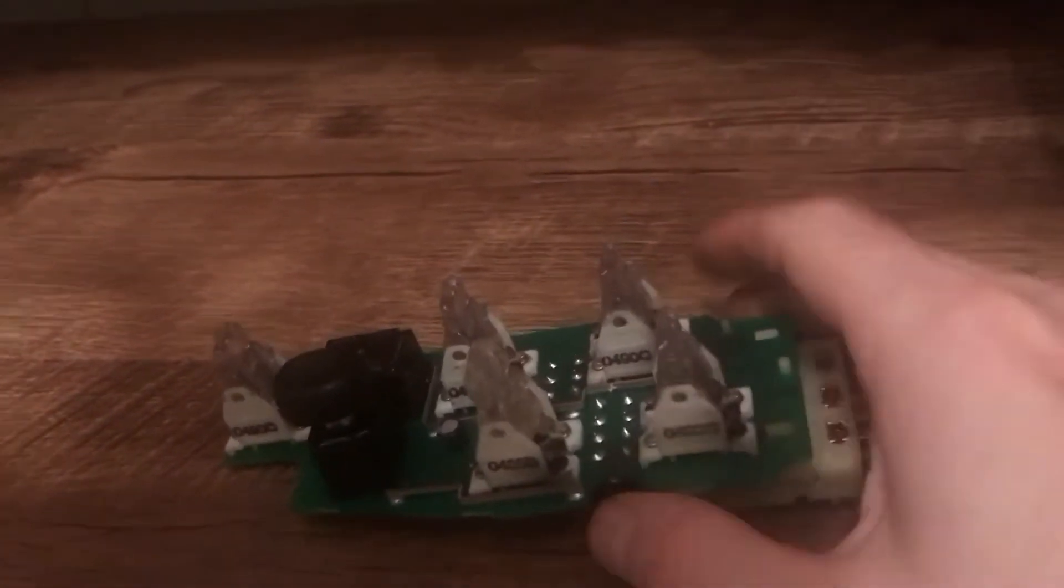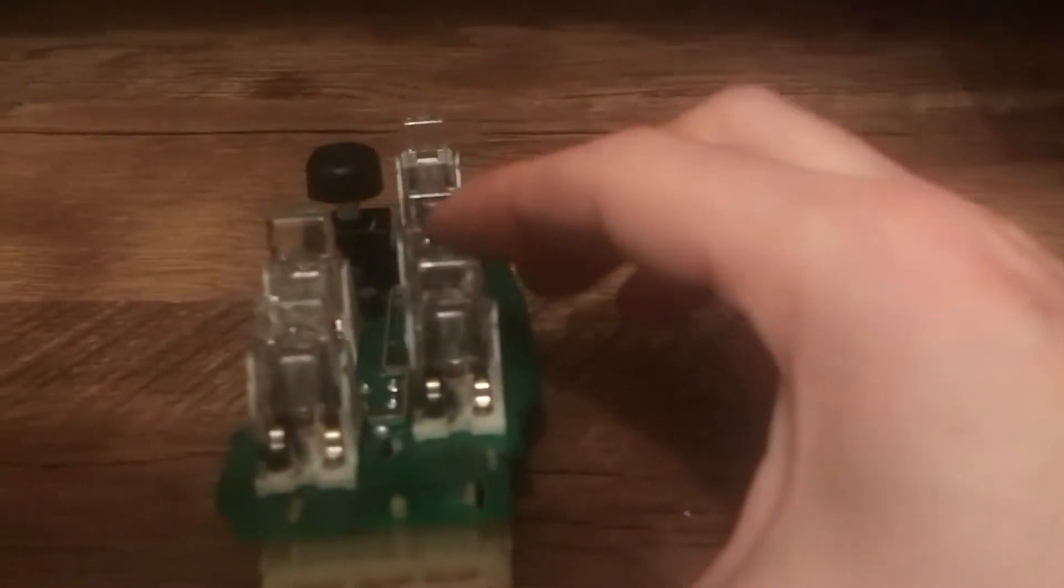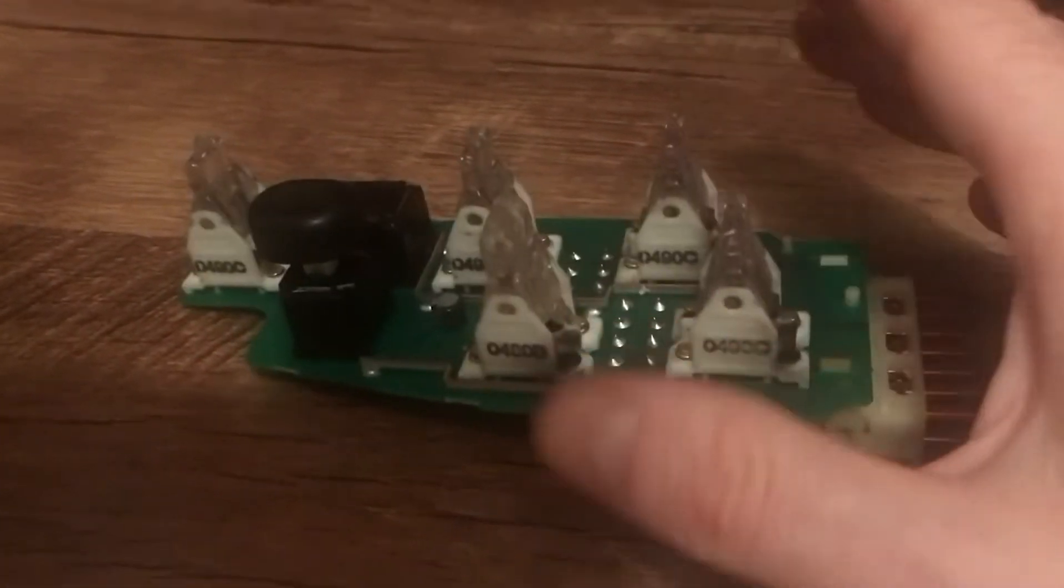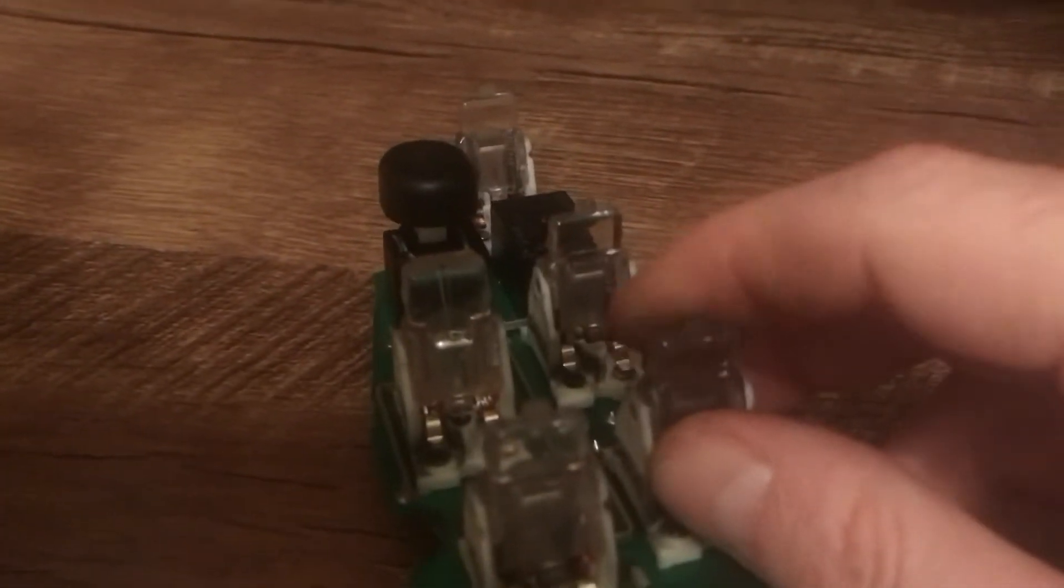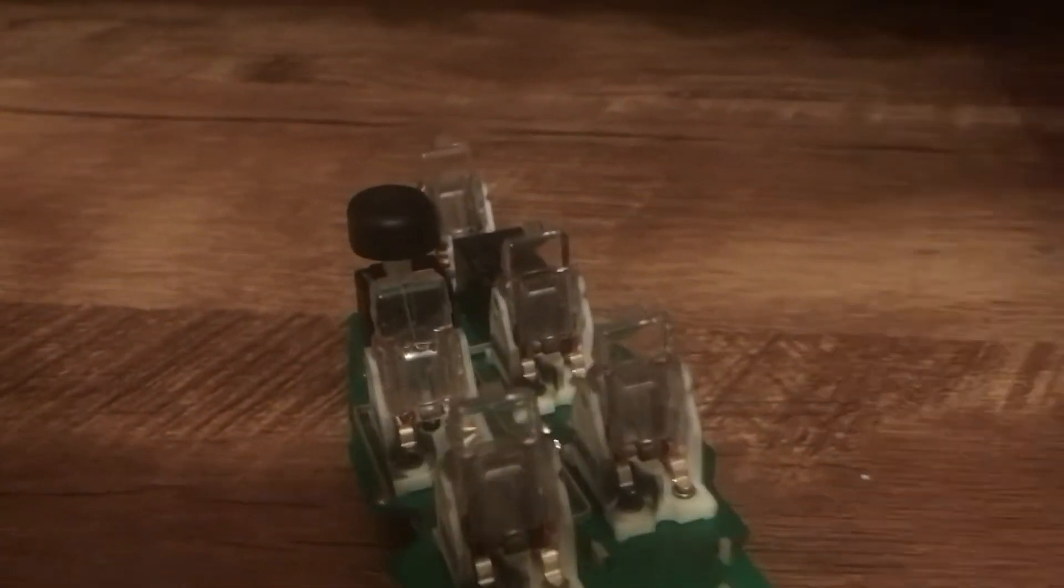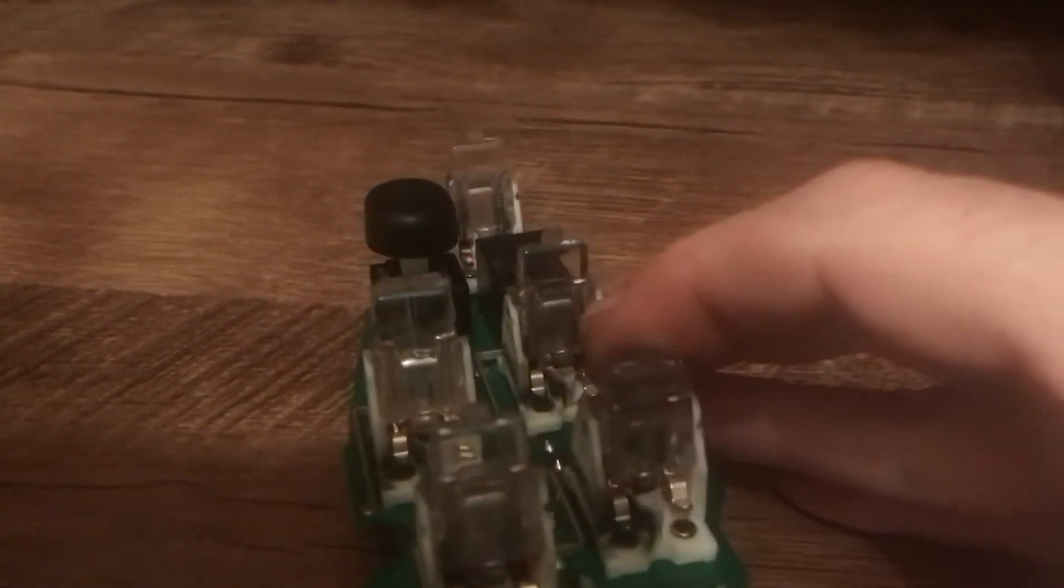Alright guys, this is the master window switch for a Dodge Durango, first generation pre-facelift. Sometimes you'll have a problem where you can control all the windows from this master switch, but the passenger door and rear passenger door switches don't seem to be able to control the windows.